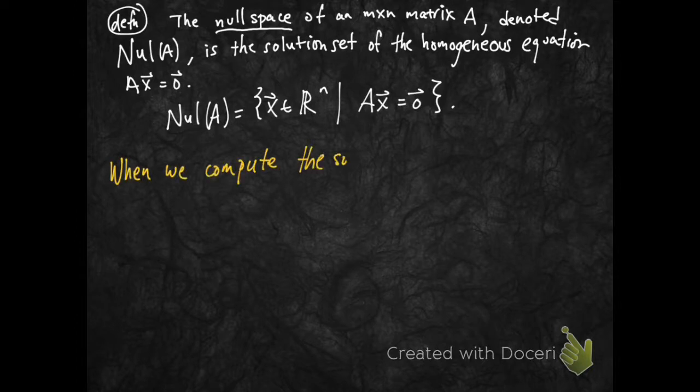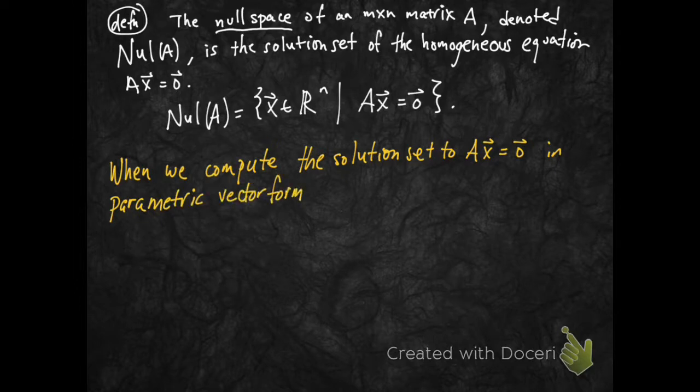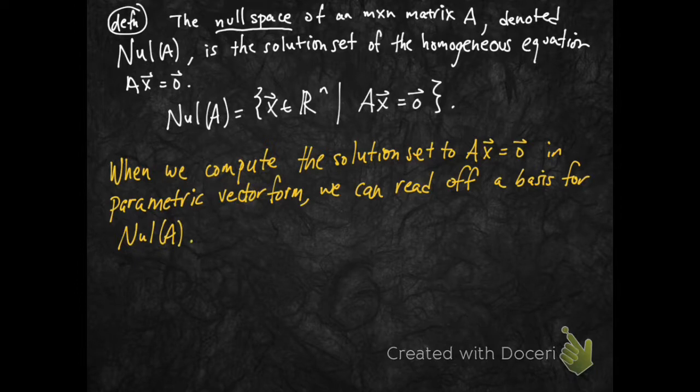When we compute the solution set to Ax equals 0 using the techniques that we've developed so far with the augmented matrix and row reduction, in order to get the parametric vector form of the solution, I claim that we can read off a basis for null A. Let's see that.